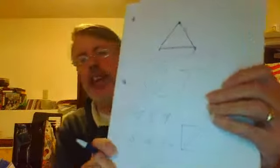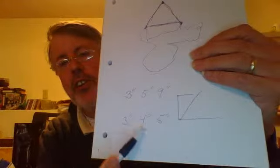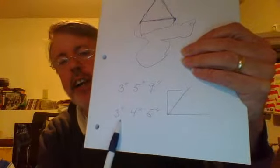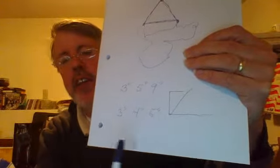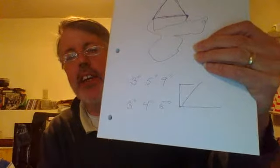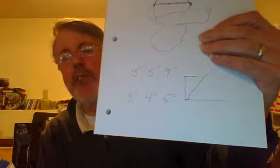On the other hand, let's say we have three inches, four inches, and five inches. Can we make a triangle? Yes. Three plus four is seven, which is more than five. Three plus five is eight, which is more than four. And four plus five is nine, which is more than three. So the sum of the two sides is always greater than the third side.